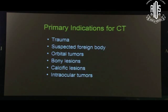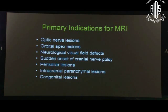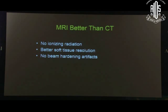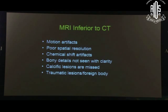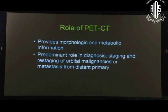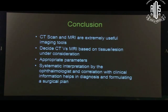To conclude: the primary indications for CT are trauma, suspected foreign body, orbital tumours, bony lesions, calcific lesions, and intraocular tumours — except bilateral heritable retinoblastoma, where MRI is preferred. Primary indications for MRI are optic nerve lesions and neuro-ophthalmological indications. MRI is better than CT because it does not give irradiation, provides better soft tissue resolution, and has no beam hardening artifacts; it is also better for neural and brain lesions. MRI is inferior to CT for motion artifacts, poor spatial resolution, inability to see bone detail, missed calcific details, and it is contraindicated if a metallic foreign body is suspected. PET-CT gives both morphologic and metabolic information and is useful for suspected metastatic or primary lesions.